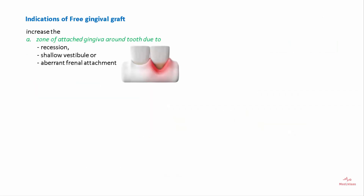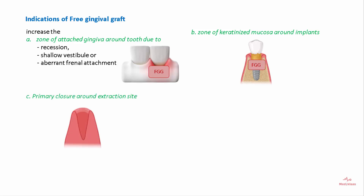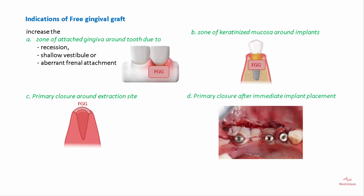The indications of free gingival graft include increasing the zone of attached gingiva around teeth affected by recession, shallow vestibule, or aberrant frenal attachments. It can also be used to increase the zone of keratinized tissue around implants, for primary closure around extraction sites, for primary closure around immediate implant placement, and for covering non-pathologic dehiscences and fenestrations.